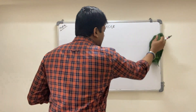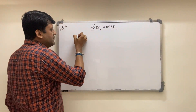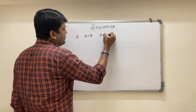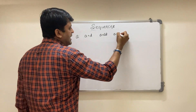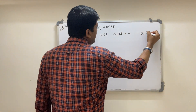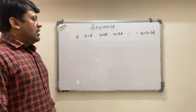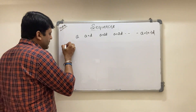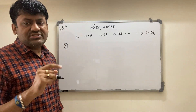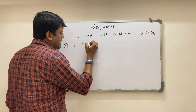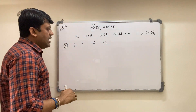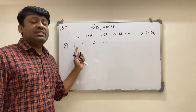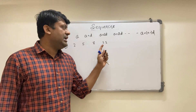To summarize: the first term is written as a, the second term as a + d, the third term as a + 2d, the fourth term as a + 3d, and the nth term as a + (n−1)·d. For the sequence 2, 5, 8, 11 — these correspond to n = 1, n = 2, n = 3, n = 4 respectively.